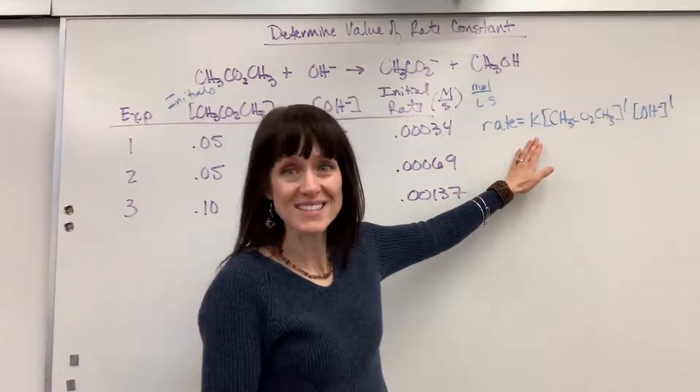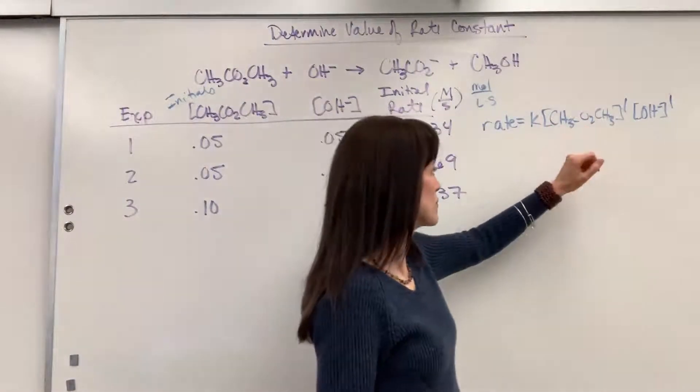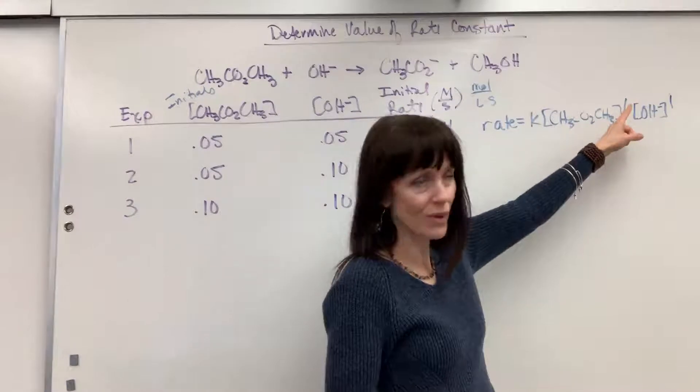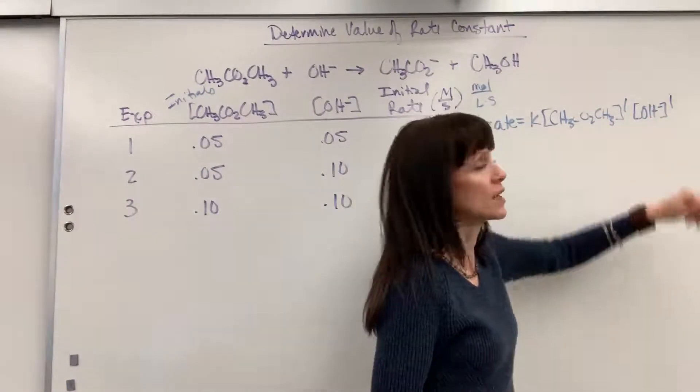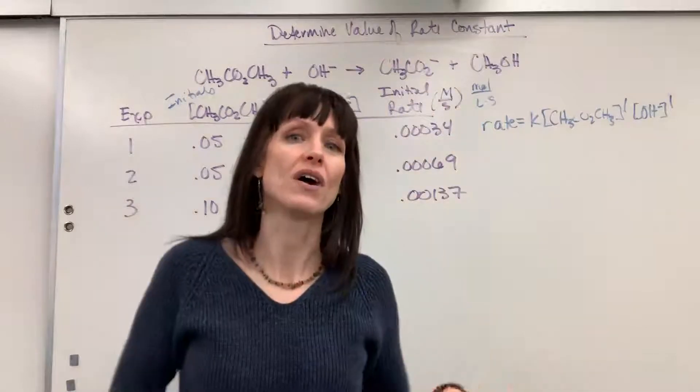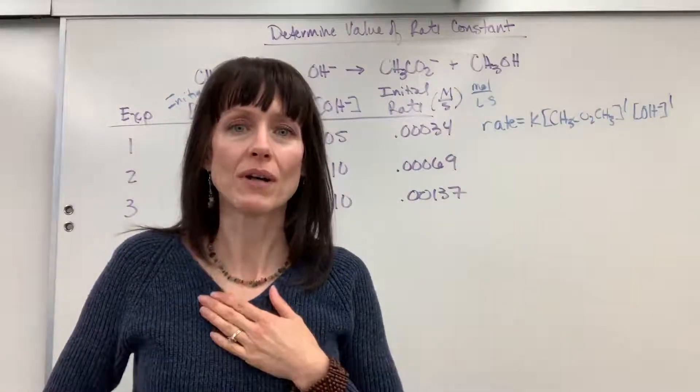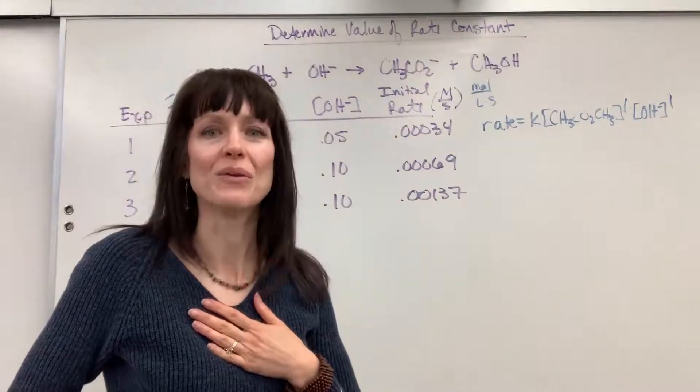Rate equals the rate constant K times the concentration of methyl acetate to the first order times the concentration of hydroxide which is also first order. It is an overall second-order reaction and we want to know what's the value of K and what's the unit.